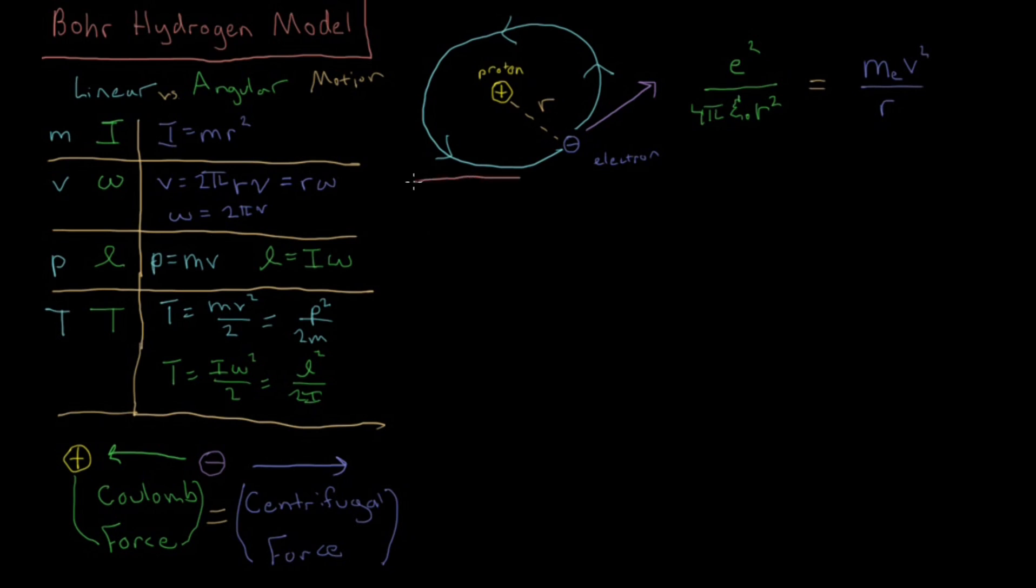So in order to help solve this system, Bohr, Niels Bohr, posited that angular momentum is going to be quantized. So in 1911 he proposed that the hydrogen atom is going to have some quantized angular momentum. So what is that going to look like?